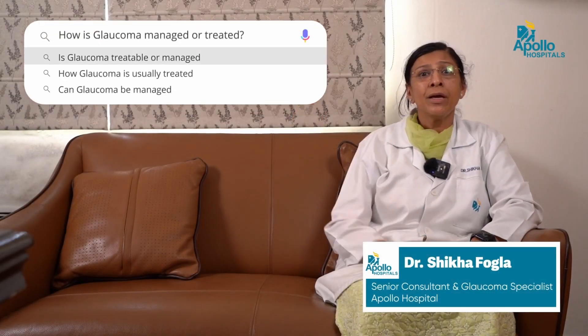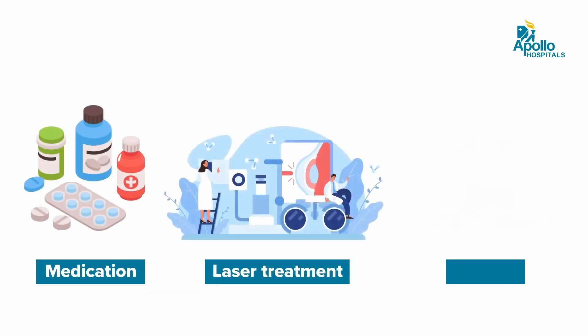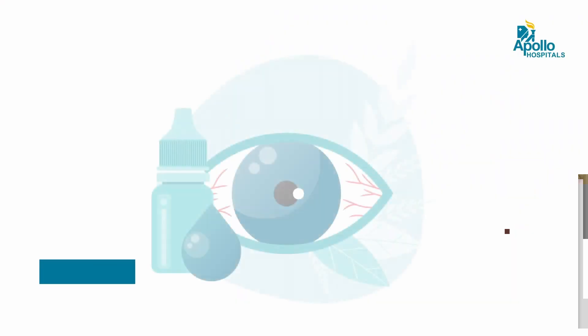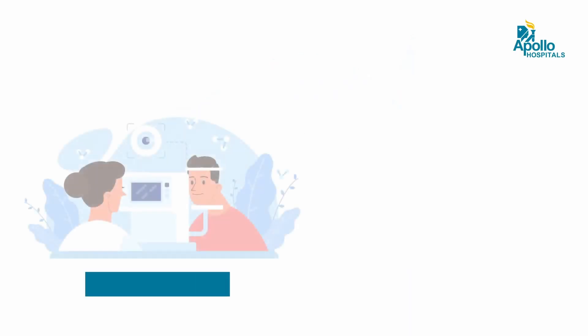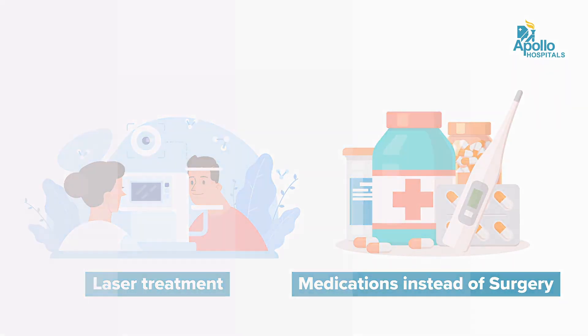How is glaucoma managed or treated? There are different modalities for management of glaucoma. The usual ones are medications, laser, or surgery where required. Nowadays, with the number of medications available, the primary treatment in open angle glaucoma is usually with eye drops, and in case of angle closure glaucoma it is laser followed by use of medications where required.